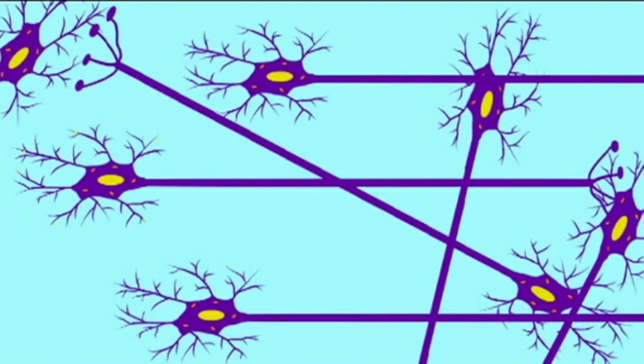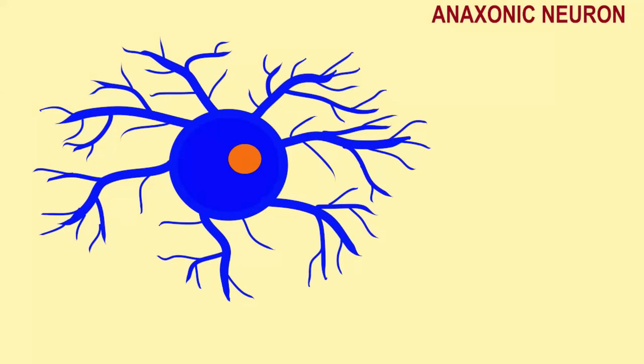While most neurons are classified as multipolar, having multiple dendrites transmitting information to the soma, the cell body, and one and only one axon transmitting messages from the soma, there are exceptions.